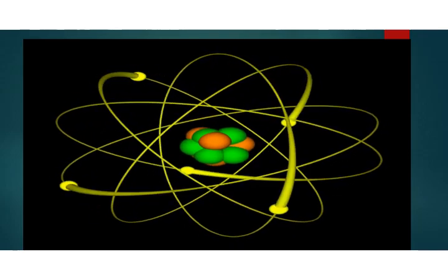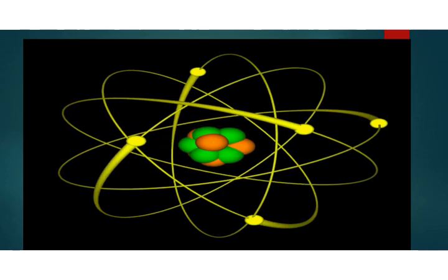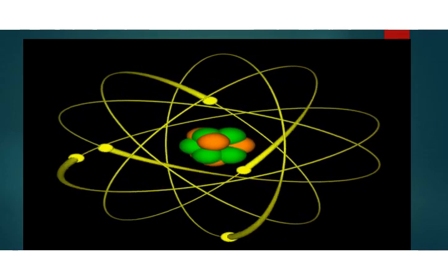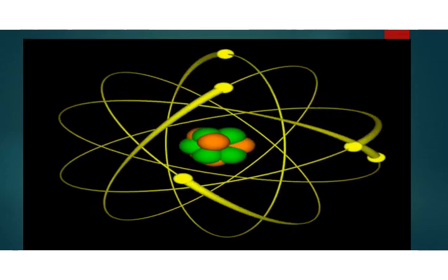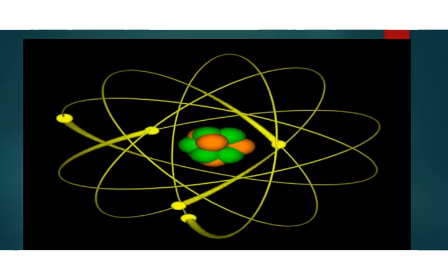In this lesson, we will discuss some of the key experiments that led to the discovery of the electron and the nucleus, which is composed of proton and neutron.